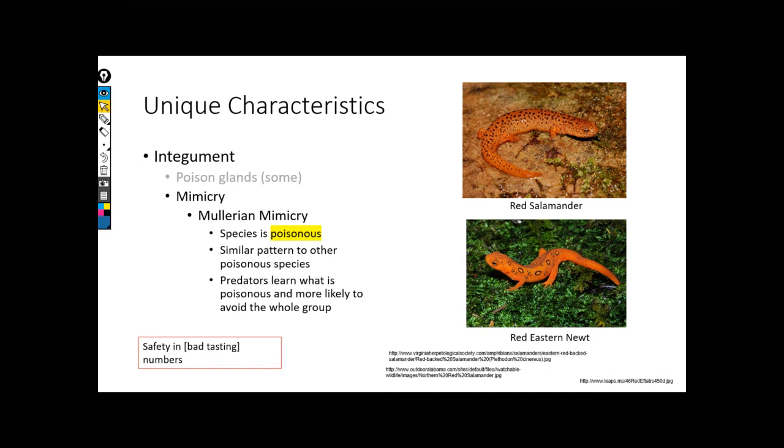The first type of mimicry we see is called Mullerian. In this case, both of the species we're interested in are poisonous or deadly. So this is very much a safety-in-numbers kind of issue. I'm poisonous and deadly, you're poisonous and deadly. So if we both look alike, then we can train predators what poisonous and deadly looks like. So then nobody's going to get eaten, because they're eventually going to learn and understand patterns.